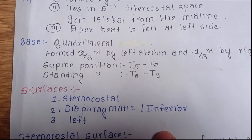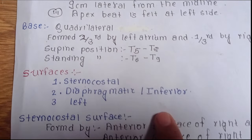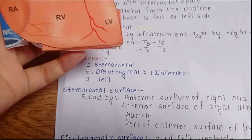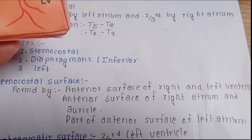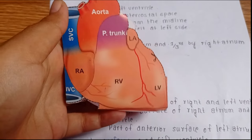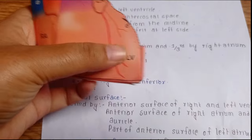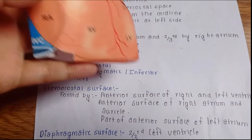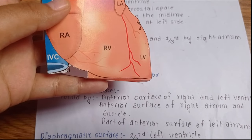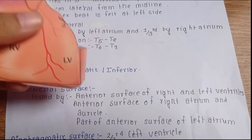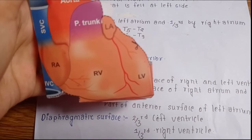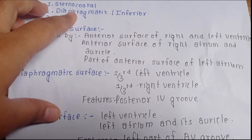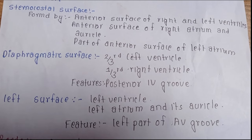Now let's go to its surfaces. The heart basically has three surfaces: sternocostal surface, diaphragmatic or inferior surface, and left surface. The sternocostal surface is formed by the anterior surface of the right and left ventricle, the anterior surface of the right atrium and its auricle, and also part of the anterior surface of the left atrium.